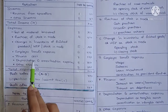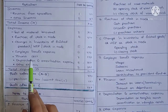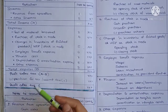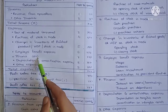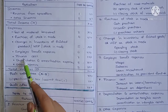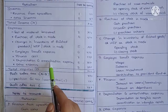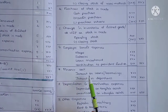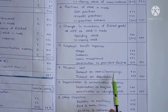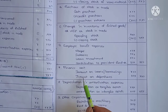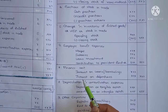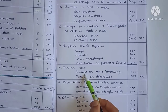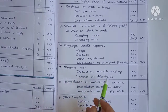The next heading is finance costs. Finance cost means interest cost on borrowings — loans, debentures, etc. Interest on loans or borrowings and interest on debentures are included in this category. This is the finance cost heading.